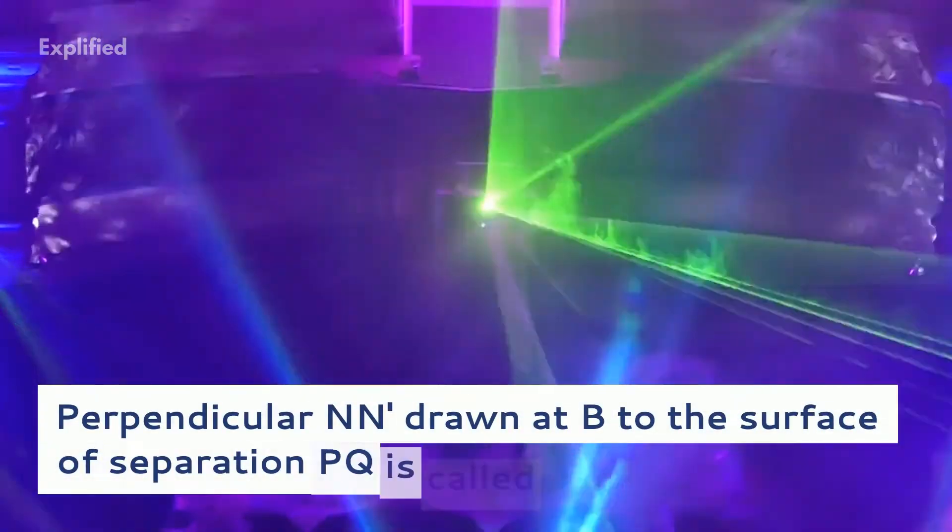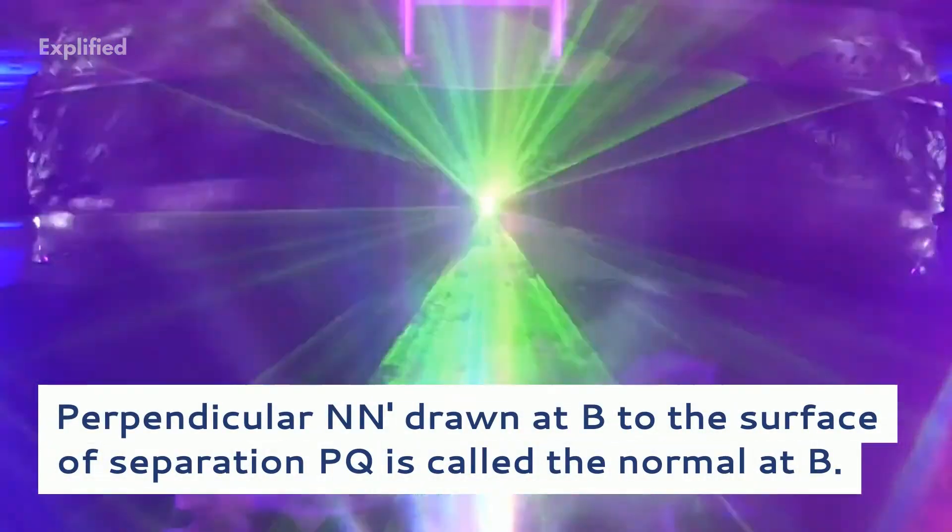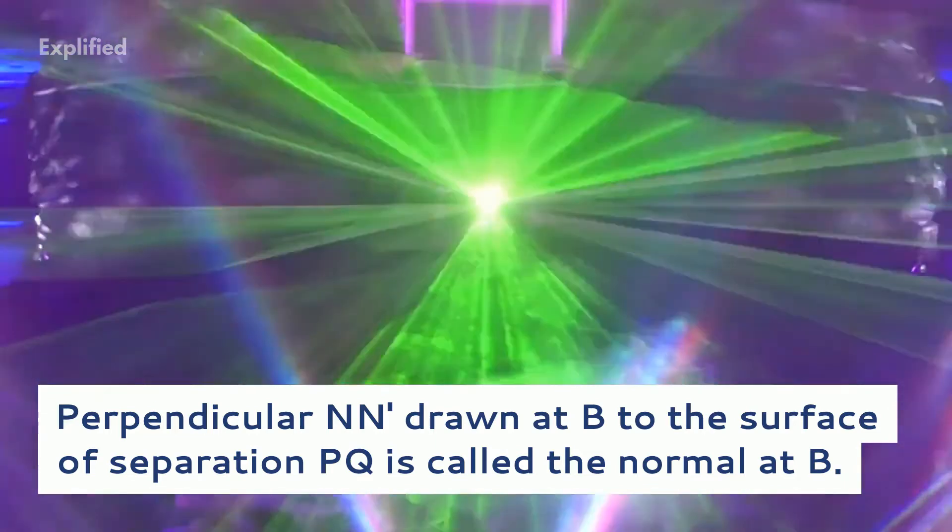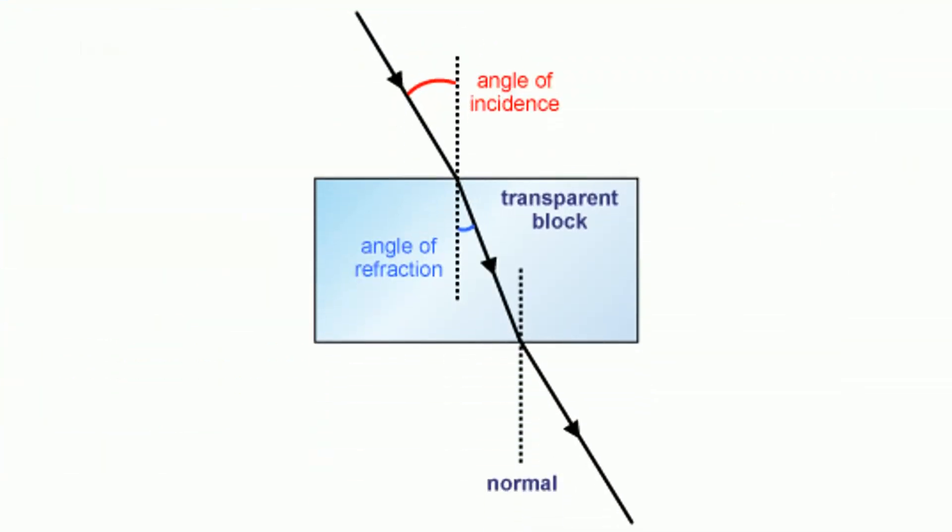A perpendicular NN' drawn at B to the surface of separation PQ is called the normal at B. The angle ABN is called the angle of incidence and the angle CBN' the angle of refraction.